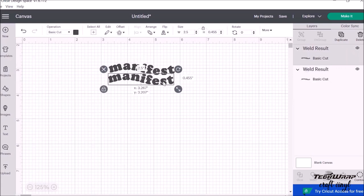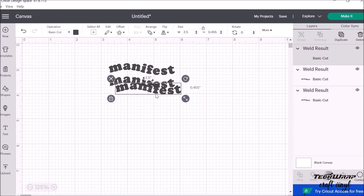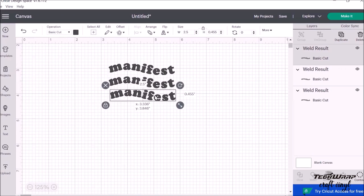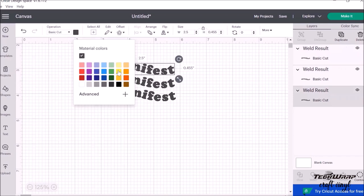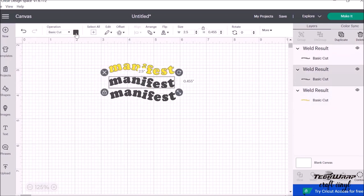Next, I'll duplicate the text twice since I want to have this in three rows with different vinyl colors. So here, I'm changing colors for each row to see how my design will look like.